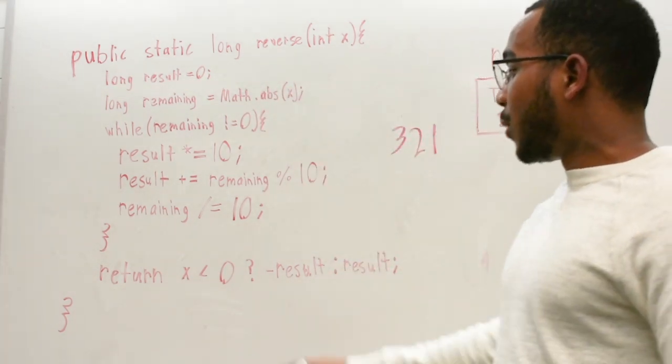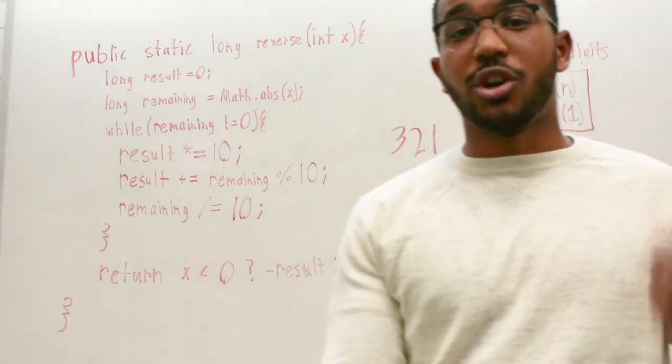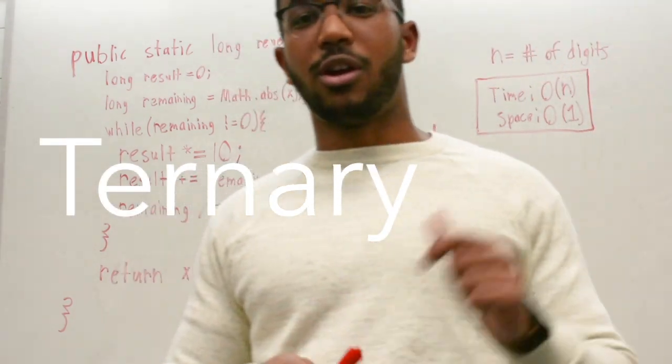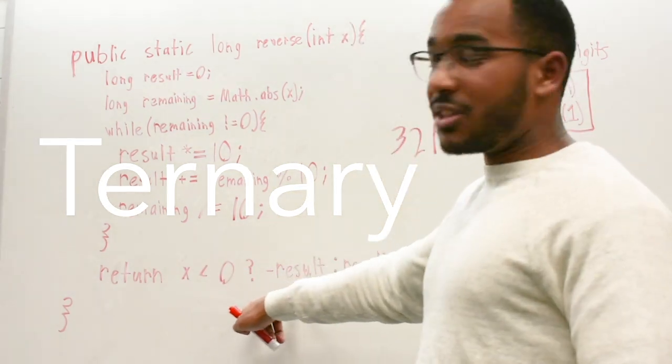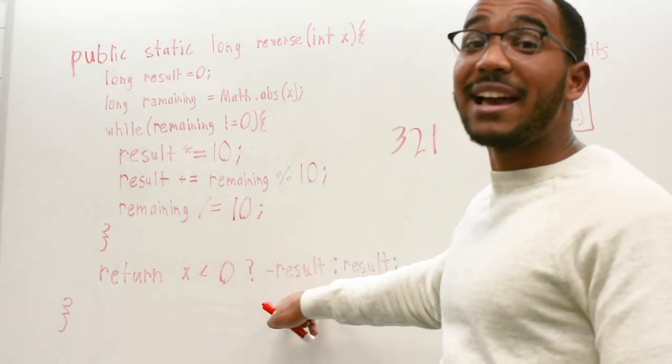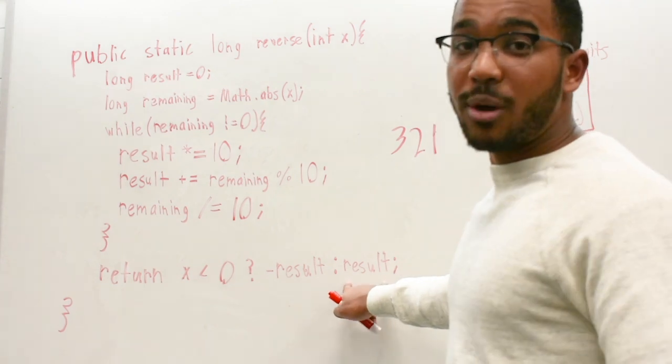So now, if it were negative, this is what's called a ternary operator. You can like Google it online. It's just a condensed if else. So if x is less than zero, if that's true, we return a negative result. If it's false, we return a positive result.